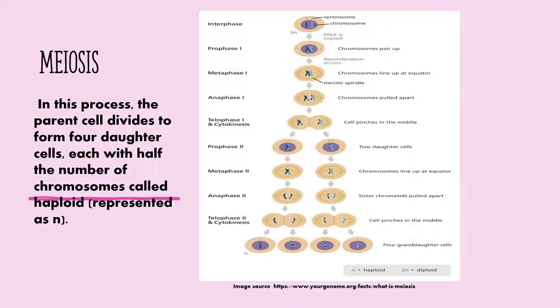In prophase II, this is now the start of meiosis II. The events that occur in prophase II: the chromosomes condense and the nuclear envelope breaks down. The centrosomes move apart, the spindle forms between them, and the spindle microtubules begin to capture chromosomes. In metaphase II, the chromosomes line up at the equator. In anaphase II, the sister chromatids are pulled apart. In telophase II and cytokinesis, the cell pinches in the middle, resulting in four granddaughter cells which are haploid, represented as N.